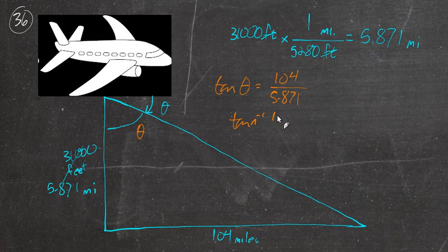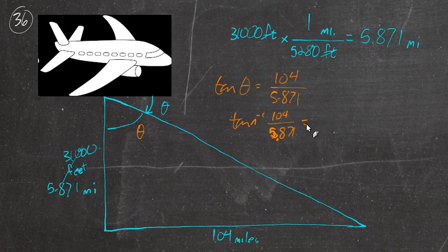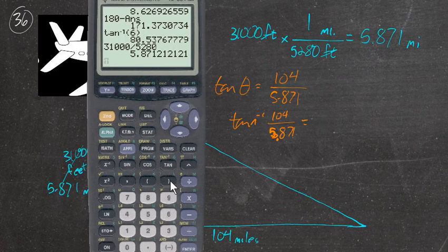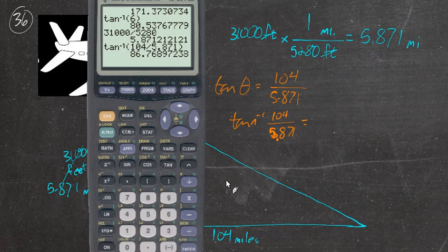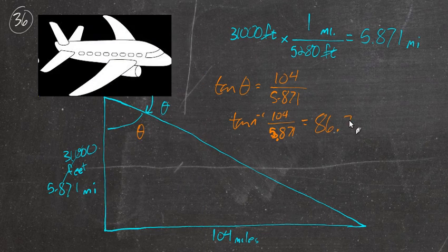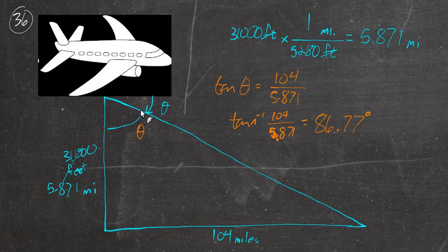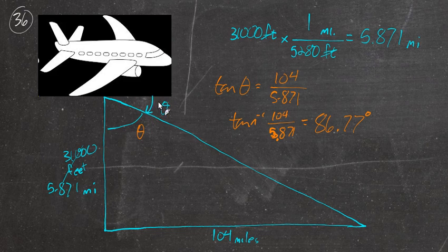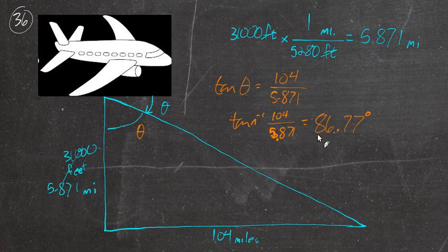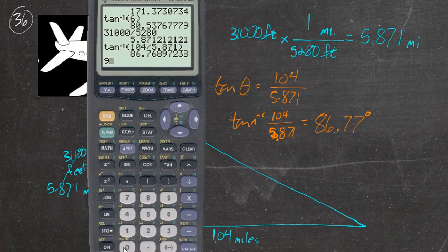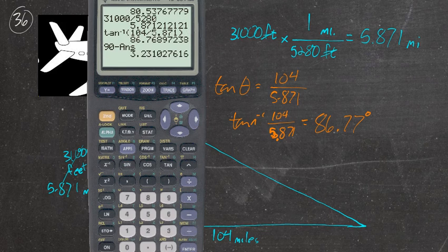So we know that the inverse tangent of 104 over 5.871 should give us our answer. We'll go to the calculator. We'll see the inverse tangent of 104 divided by 5.871. And that's 86.77 degrees. But again, the pilot doesn't want to know that. He doesn't want to know the angle between the vertical and where he wants to be. He's flying horizontally, so he wants to know the angle that he has to go from horizontal down to the angle that he's supposed to be flying at. So we'll do 90 minus 86.77.